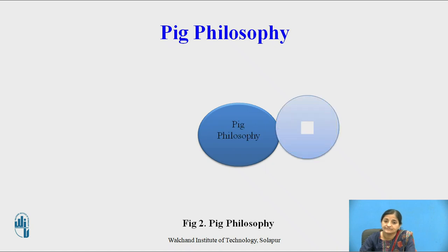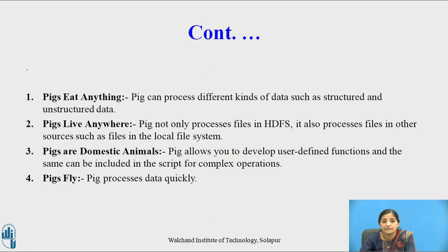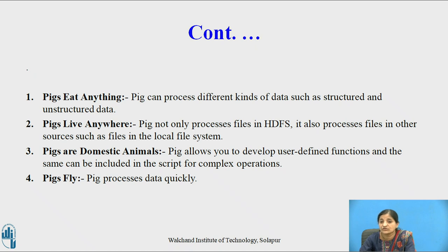Now let us see the Pig philosophy. The four philosophies are: pigs eat anything, pigs live anywhere, pigs are domestic animals, and pigs fly. 'Pigs eat anything' means Pig can process different kinds of data — structured and unstructured. 'Pigs live anywhere' means Pig not only processes files in HDFS but also processes files in all resources such as the local file system. 'Pigs are domestic animals' means Pig allows you to develop user-defined functions in any programming language and embed them in Pig Latin scripts for complex operations.